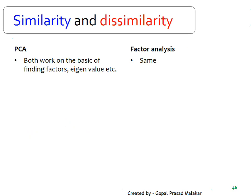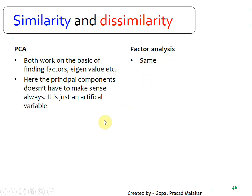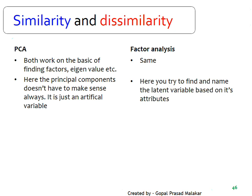In PCA, both methods work on the basis of finding factors using eigenvalues. However, in principal component analysis, the components don't have to make sense — they are just artificial variables — whereas in factor analysis, you try to interpret what each factor is measuring.